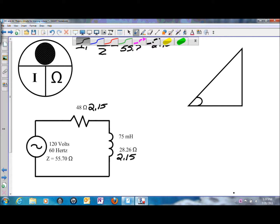So the voltage drop on the resistor, we'll call that ER, is going to be I times R, the value of the resistor, or 2.15 amps of current flow times 48 ohms of resistance. That is going to give us a voltage drop on the resistor of 103.2 volts.